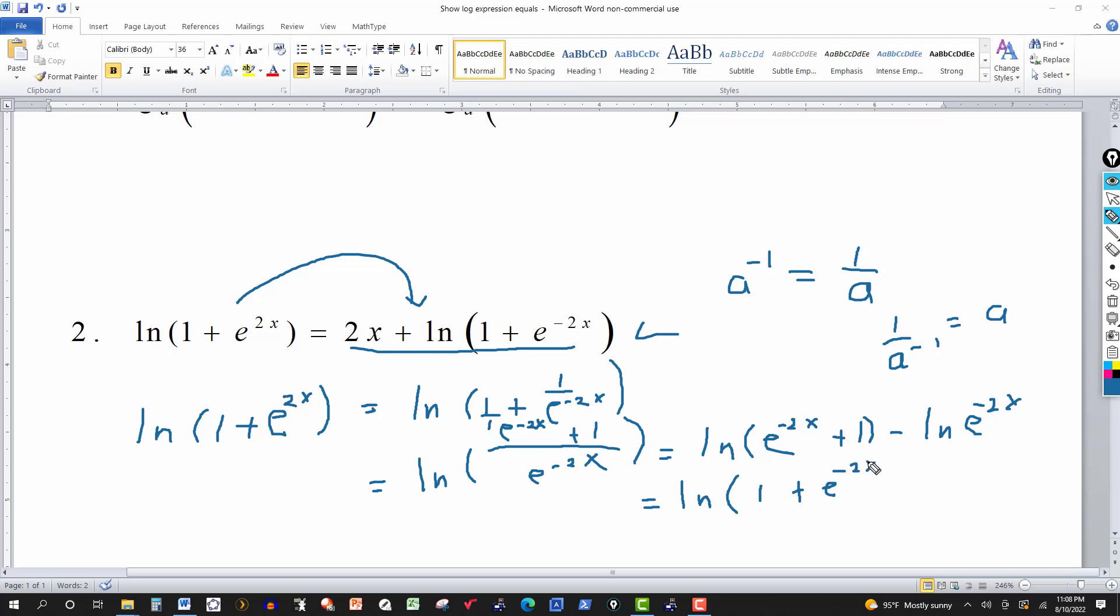And this would be minus and remember this base here is e so I have the natural log of e to the minus 2x. It's understood but I'll go in and write it in, that's e. So because this is e and this is e the answer to that is minus 2x so that's a minus and a minus is a plus. Again I'll put it in front so it looks just like the original statement but it's still the same. Minus times the minus 2x is 2x and this is going to be plus ln of 1 plus e to the minus 2x.